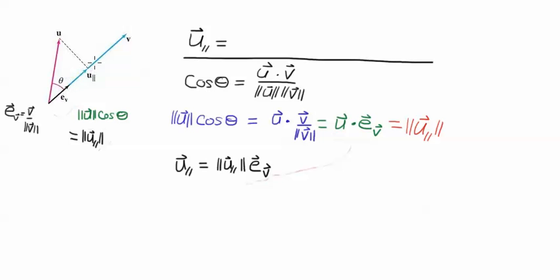So you can construct u parallel by saying it's the length of u parallel times the unit vector in the v direction.